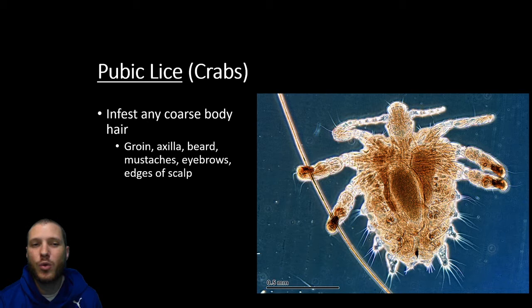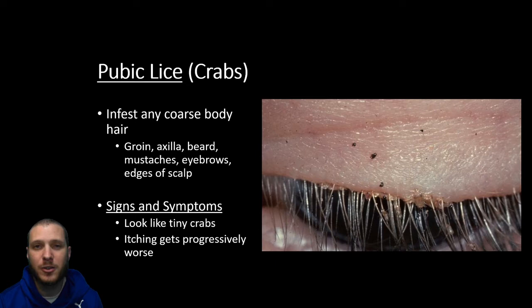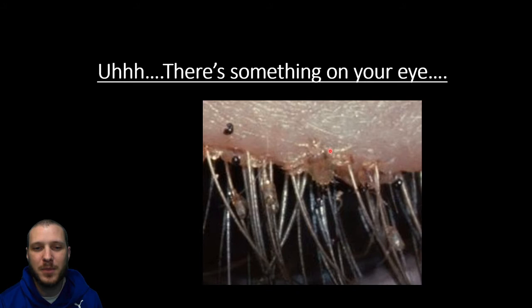Next we have pubic lice, also known as crabs. These are parasites that infest the coarse body hair — pubic hair, armpit hair, beard, mustache, eyebrows, or eyelashes. They look fairly different from regular lice and are somewhat easy to see with the naked eye because they actually look like crabs. The itching is pretty relentless. You can even see them in someone's eyelashes in close-up images.